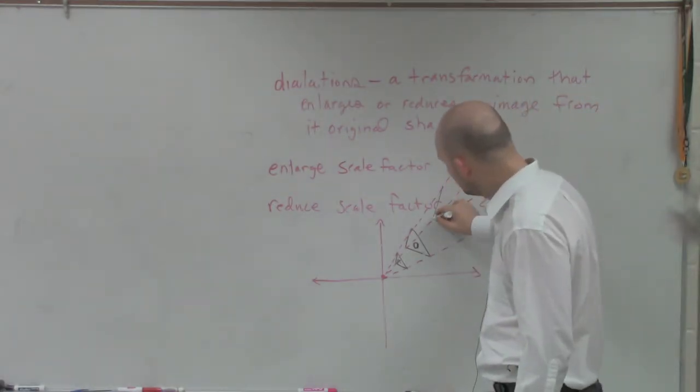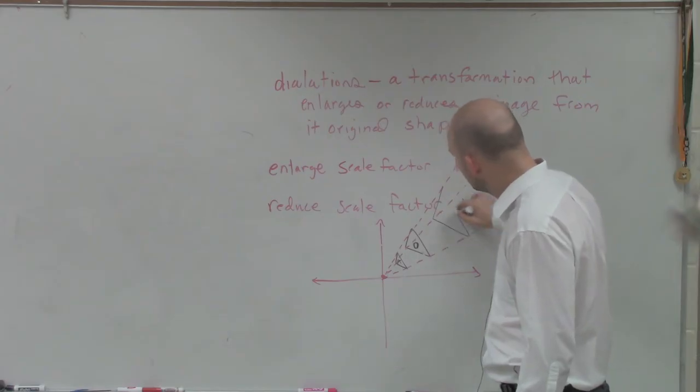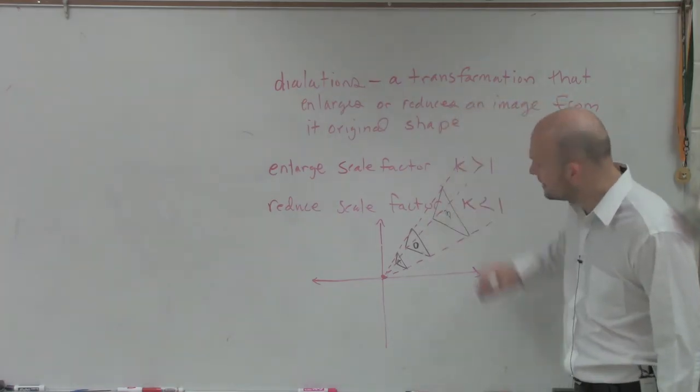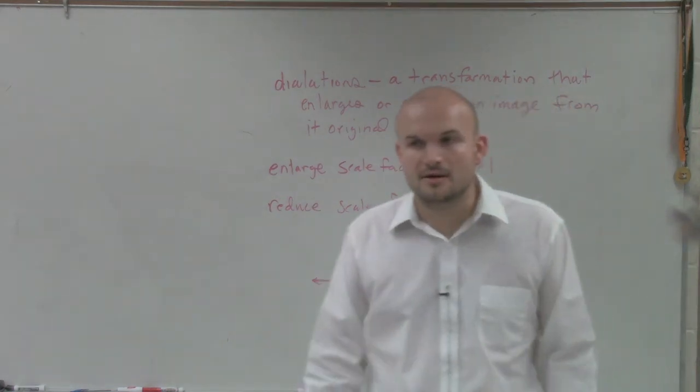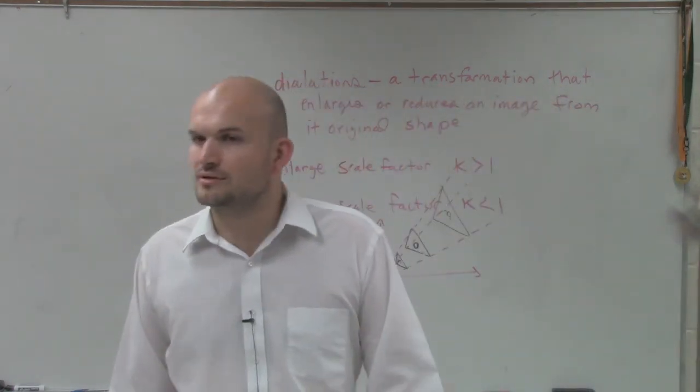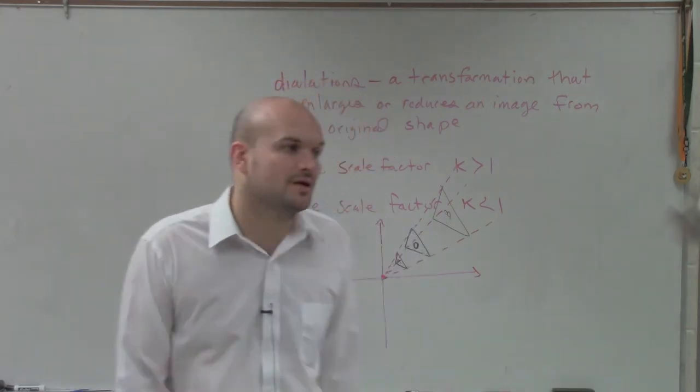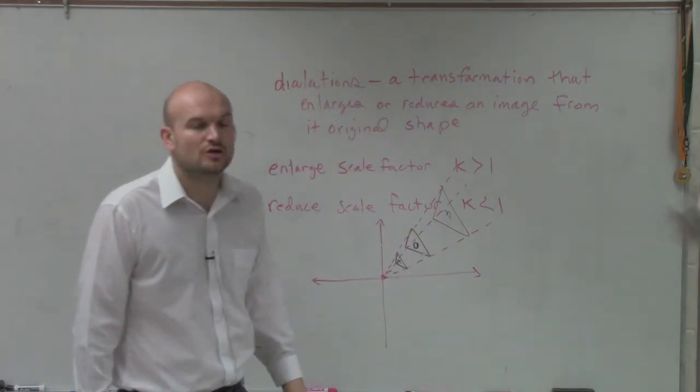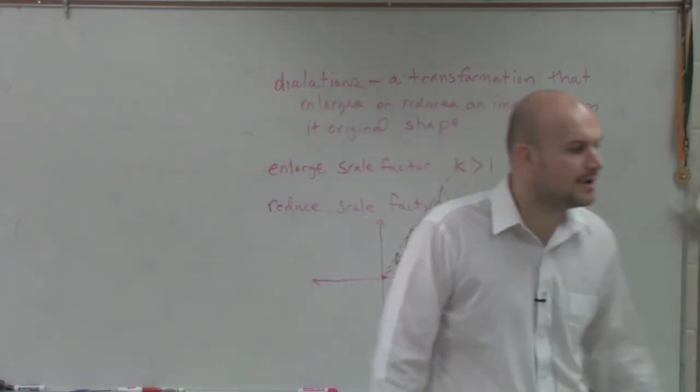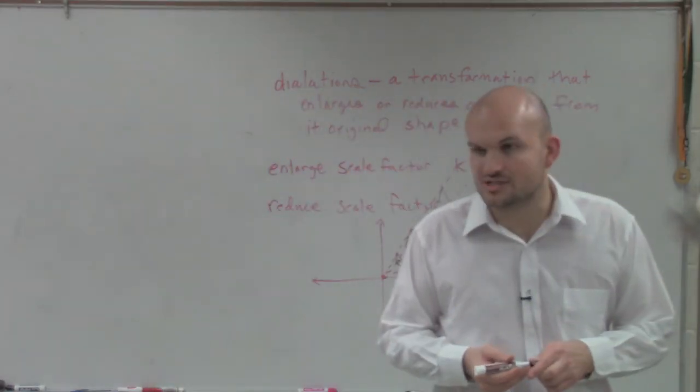And B, you can see that B has the same shape and size, but that one's much larger. Or not the same shape, but not the same size. That one's larger. That is what we call an enlargement, where the scale factor is going to be greater than 1. Anybody have any questions on that? Yes, Colin?